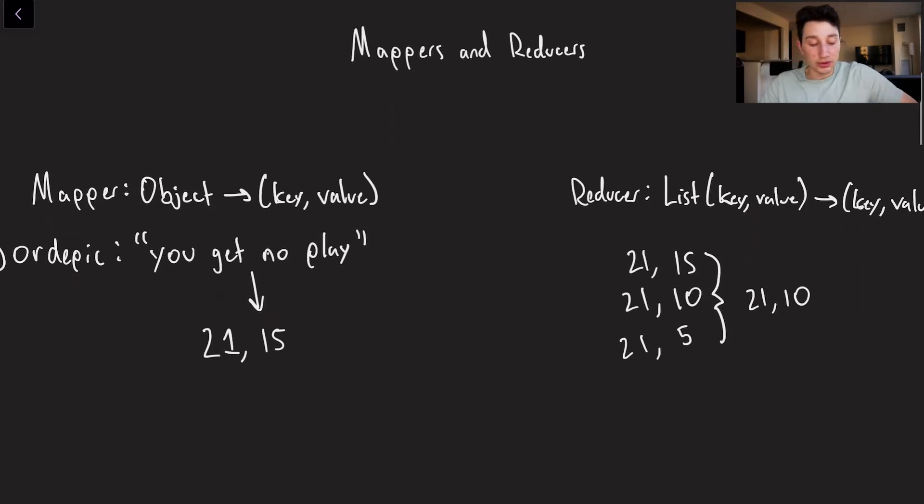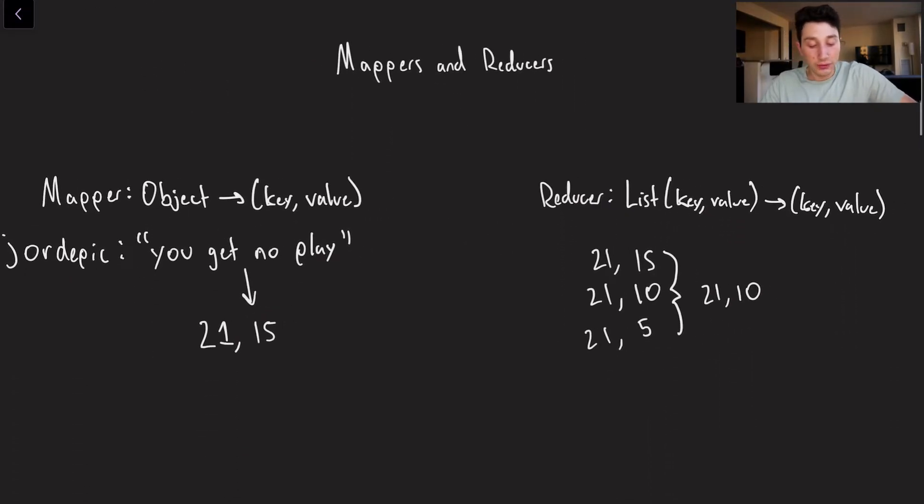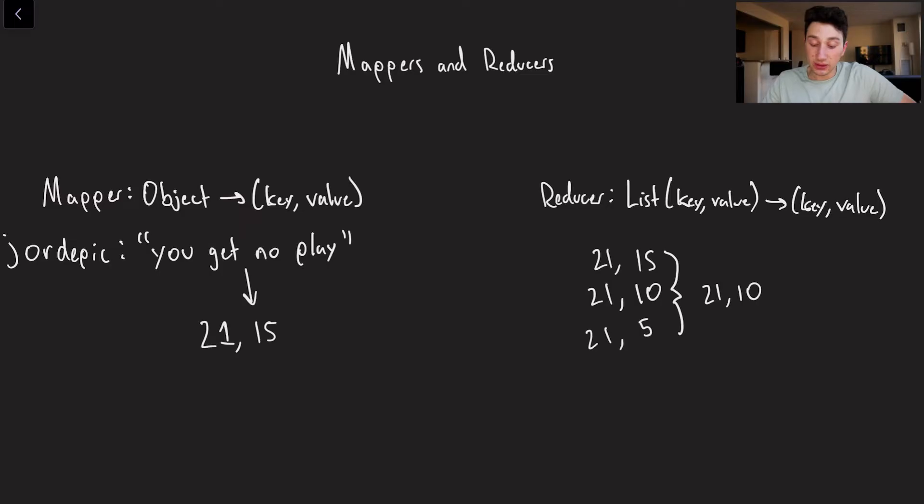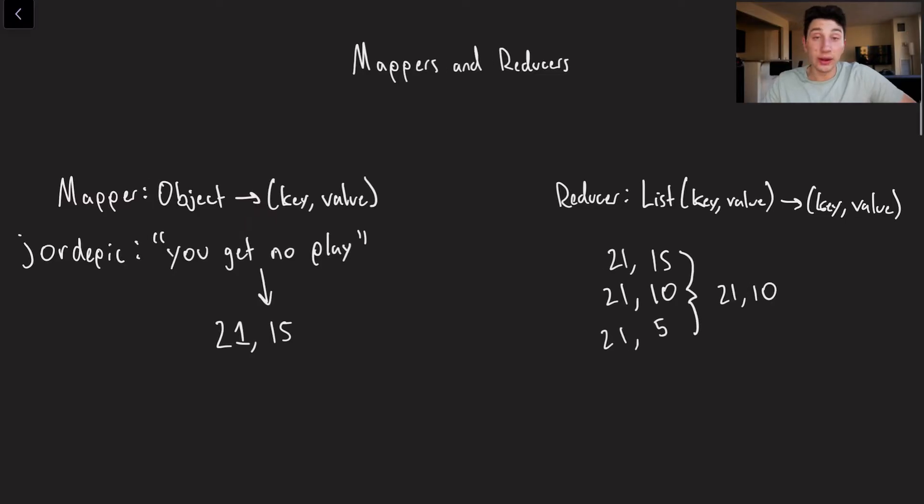Okay, so let's move on to mappers and reducers. What are they? If you're not familiar with functional programming, maybe this will be useful for you. Otherwise, sorry for wasting your time. So let's imagine that I have a username, or rather a bunch of usernames, and I have a message that they sent.